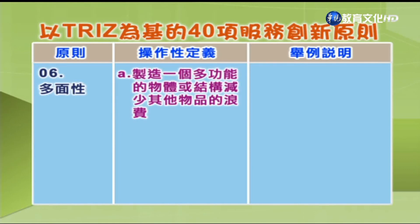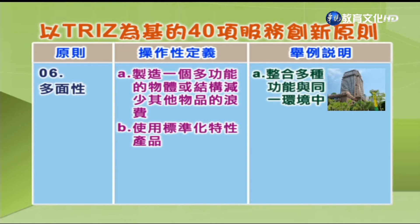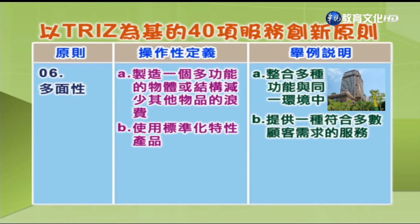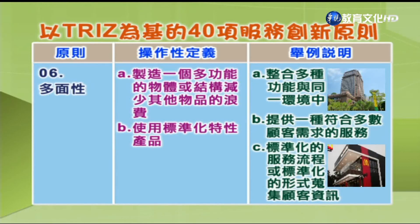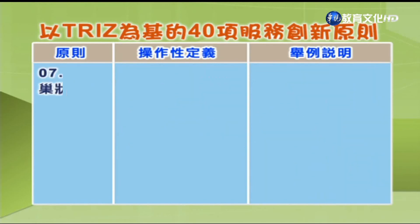第6项「多面性」：A.制造一个多功能的物体或结构来减少其他物品的浪费；B.使用标准化特性产品。举例：A.整合多种功能于同一环境中，如精控机构；B.提供一种符合多数顾客需求的服务；C.标准化的服务流程如麦当劳，或以标准化形式搜集顾客资讯如抱怨卡或意见箱。